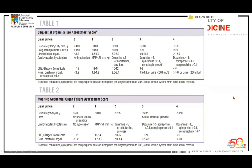For ICU settings, qSOFA cannot be used because those three vital signs are augmented by ventilation and inotropes, reducing specificity and sensitivity. We suggest that intensivists use the Sequential Organ Failure Assessment — the SOFA score — which consists of six criteria: respiratory, coagulation/platelet, liver, cardiovascular, CNS, and renal.